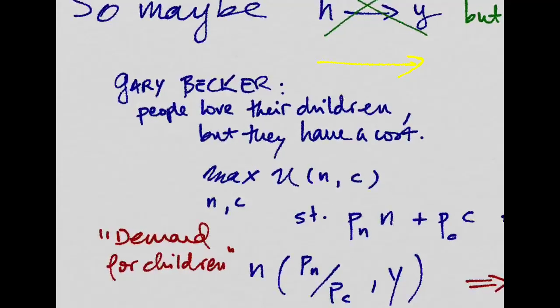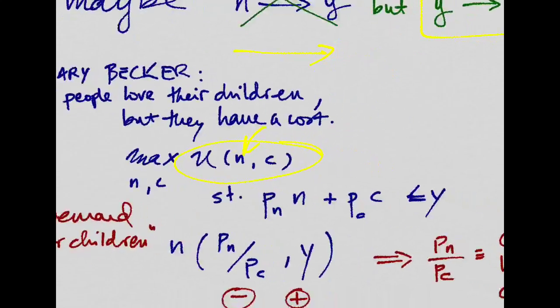So what Gary Becker said was that families love their children. So that enters into their utilities, the number of children, but also children have a cost. You have to pay for children. You have to educate them. And there might be some other costs attached to having children.